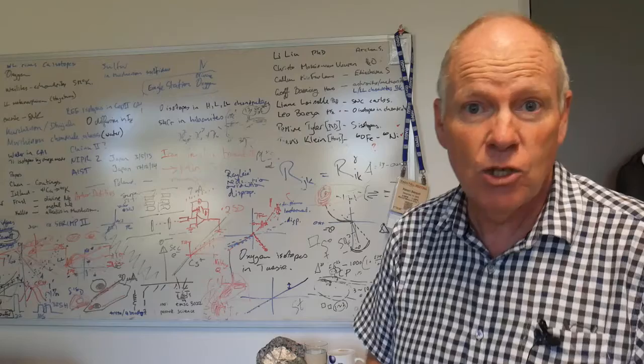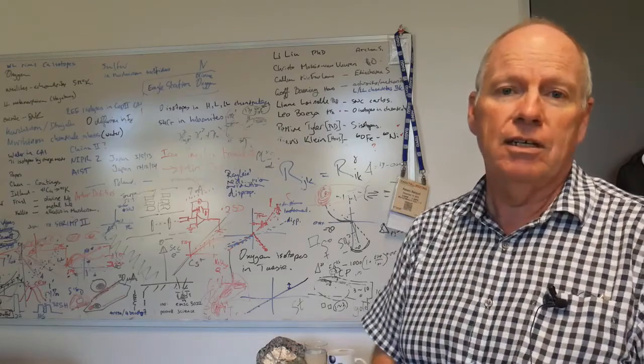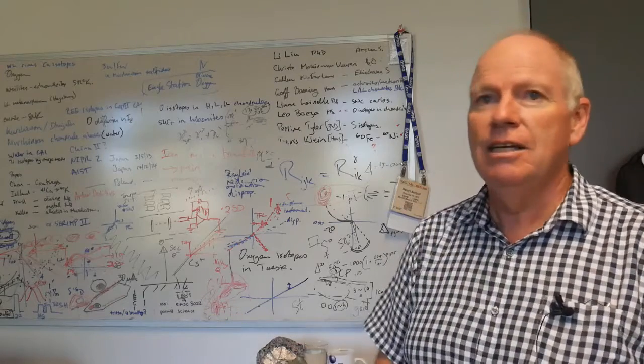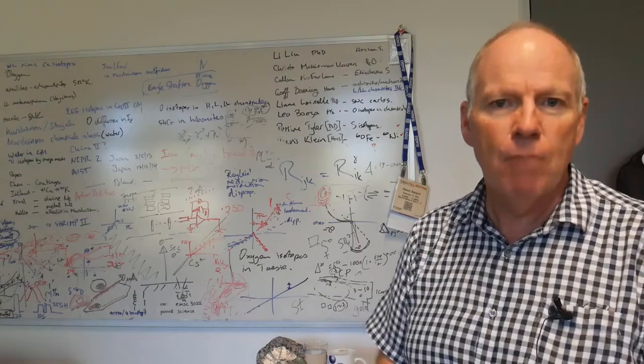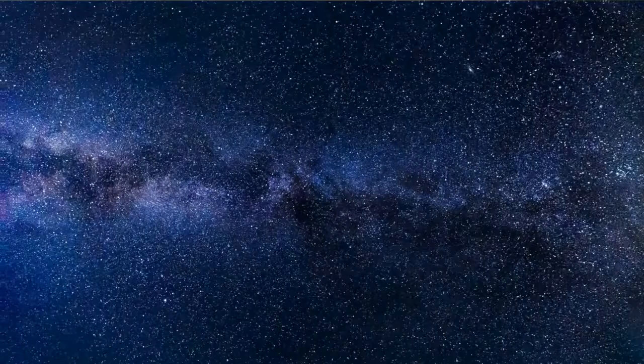The short answer to that is yes, there was a huge amount of water. Water is made of hydrogen and oxygen. It's the most common molecule in our solar system as it's forming.